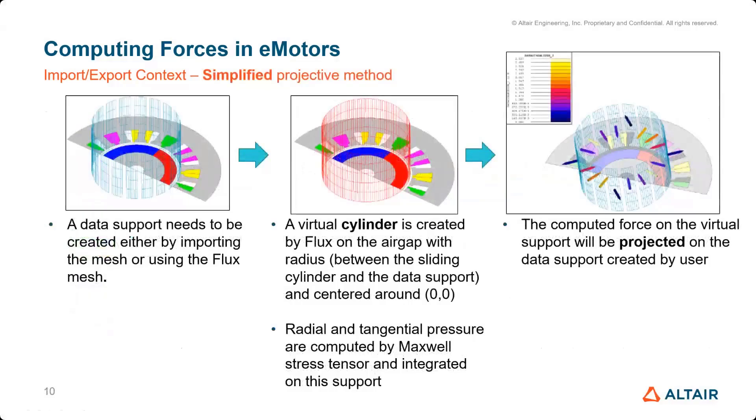But if we focus on the two first methods, the idea is that you will create a data support. So that can be the two tips of your stator housing, a stator tiff. This will be like a cylindrical shape. And with the simplified projective method, Flux will create a virtual cylinder on which is doing the max pressure integral. And then it will map these forces onto the external mesh that you have imported.